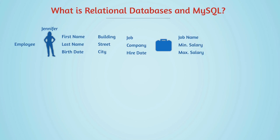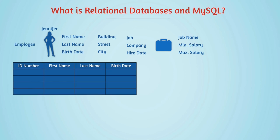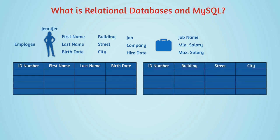There is some kind of relation between all of this information. We can say there is a group of data or a table for information about Jennifer, like the first name, last name, and birth date. We can add other elements like email, phone number, and nationality. We can add another table for addresses — the building, street, and city — linked to the person using an ID.